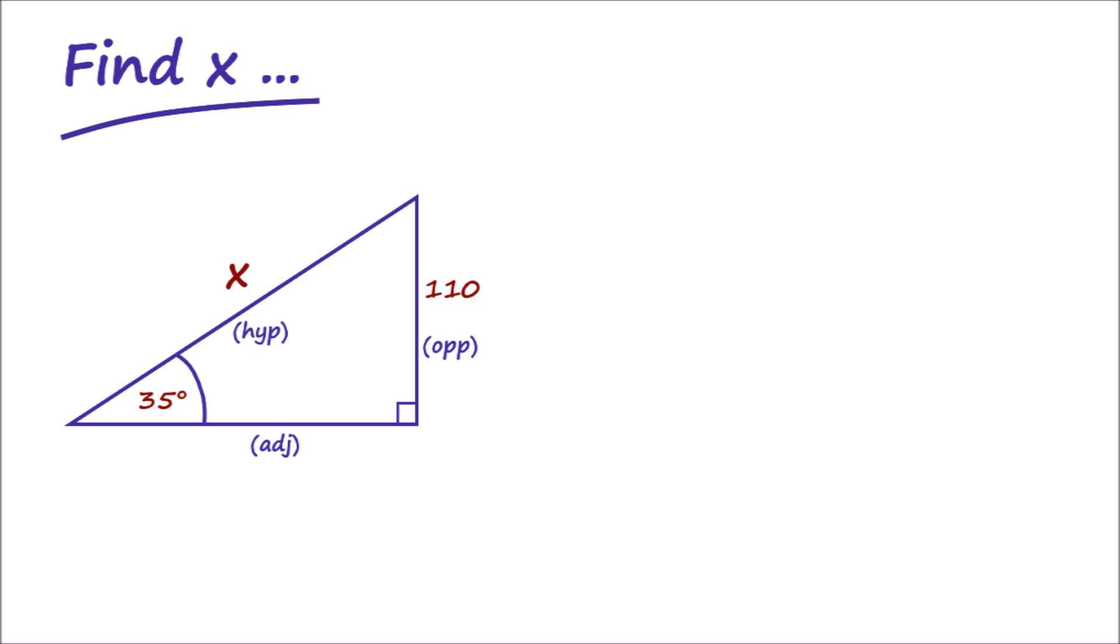Now, we can use the mnemonic word sohcahtoa to help memorize the basic trigonometric relations between angles and sides for right angle triangles. Here, the word sohcahtoa reminds us that the sine of an angle equals the opposite side divided by the hypotenuse. Cosine equals the adjacent over hypotenuse, and tangent equals the opposite over adjacent.